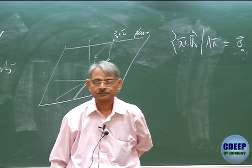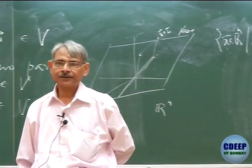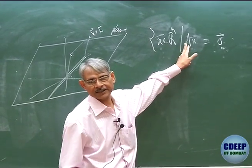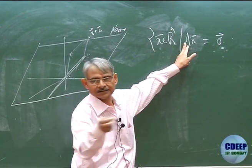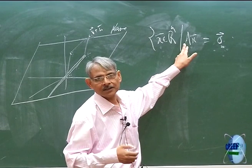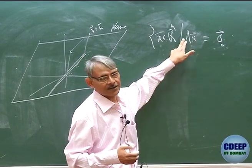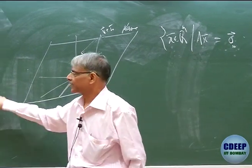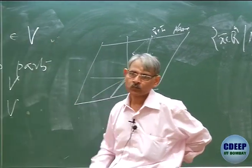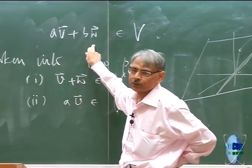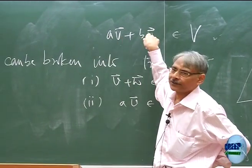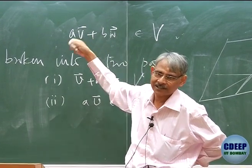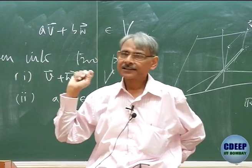One prime example of a vector space is the null space of a matrix. If A is an m×n matrix, the null space is the set of all x in Rn such that Ax = 0. This is a vector space: if Ax = 0 and Ay = 0, then A(x+y) = Ax + Ay = 0+0 = 0, using the distributive property of matrix multiplication. Similarly, if Ax = 0 then A(λx) = λ(Ax) = λ·0 = 0. So the null space is a vector space.